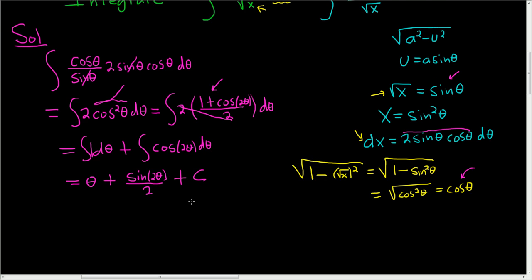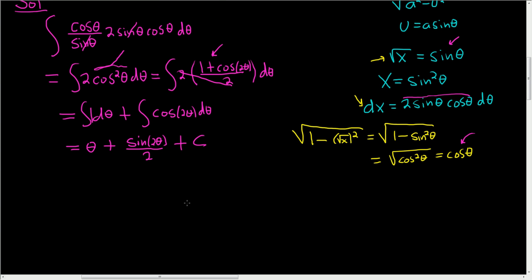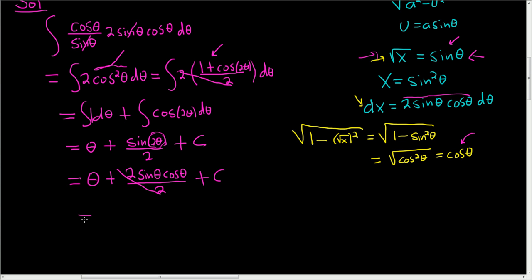At some point we have to draw a triangle to finish this problem. Our triangle involves theta, so we have to get rid of the 2 theta. Using the double angle identity, sine of 2 theta equals 2 sine theta cosine theta, divided by 2. So we end up with theta plus sine theta cosine theta plus c.